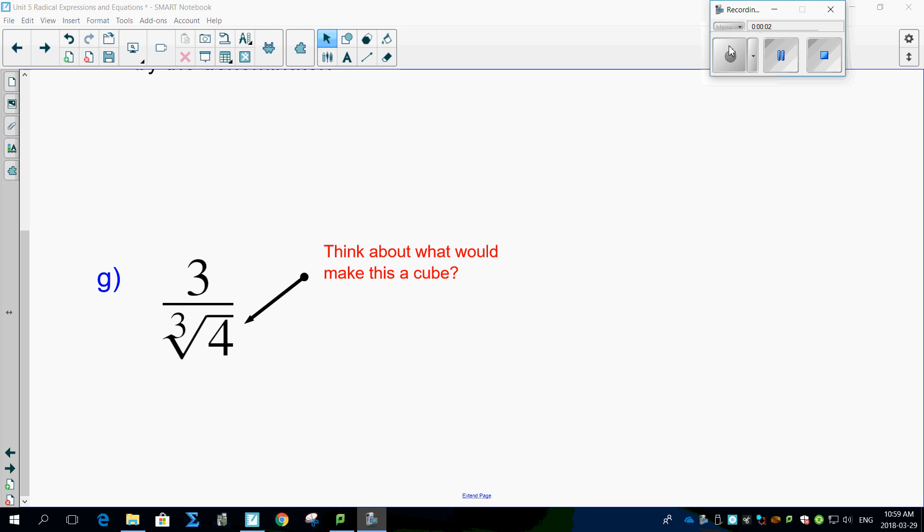Well, here comes a really cool question. How do you rationalize something if it's a cube root? Well, because a square root, if you think about it, if this is a square root of, let's say, 5, all you have to do is multiply it by 5, and guess what you get? You get root 25, which is now square rootable, and that's plain old 5.